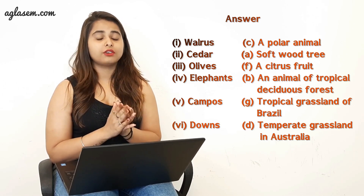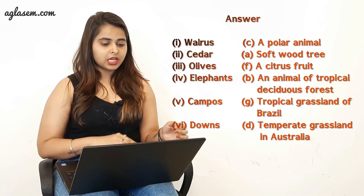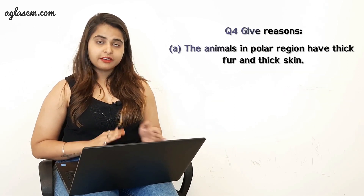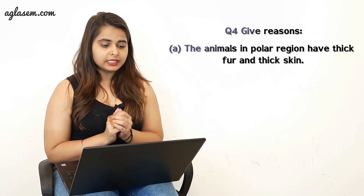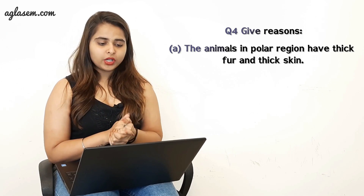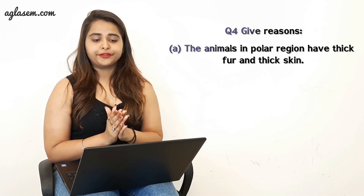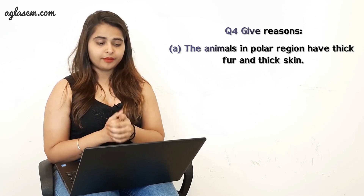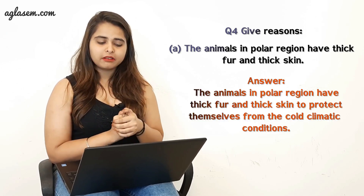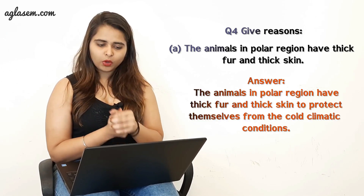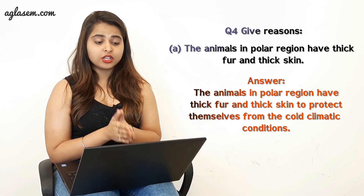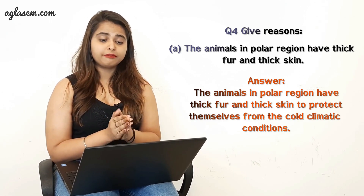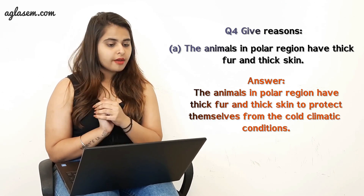Question four asks you to give reasons. The first part: why do animals in polar regions have thick fur and thick skin? The answer is that animals in polar regions have thick fur and thick skin to protect themselves from the cold climatic conditions.